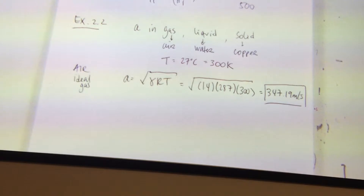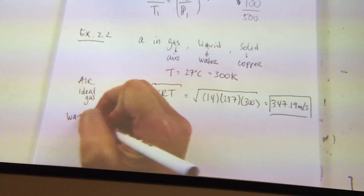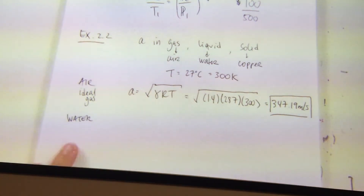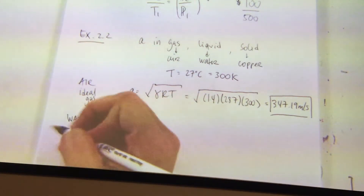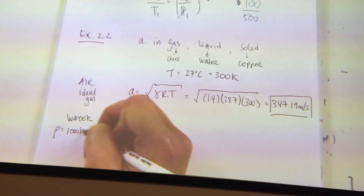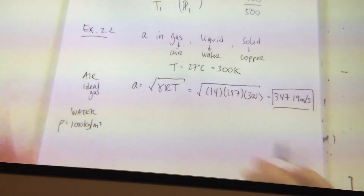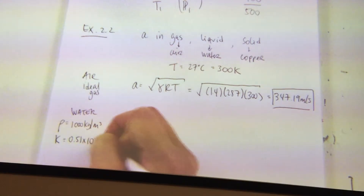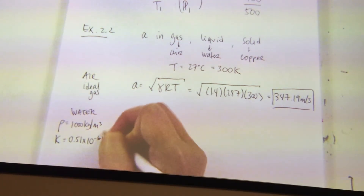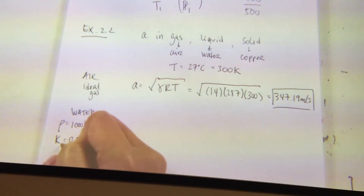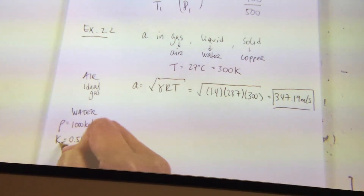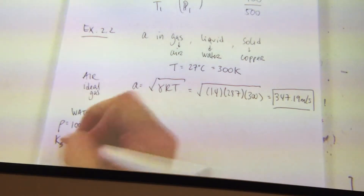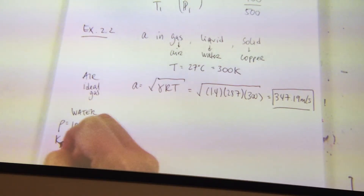So now let's go to water. For water we're going to have to use different equations — this air equation is only for a gas. For water we need a couple of properties. The density of water is about 1,000 kilograms per meter cubed. And the compressibility constant is 0.51 times 10 to the negative 6 per kilopascal. This is the isothermal compressibility constant.